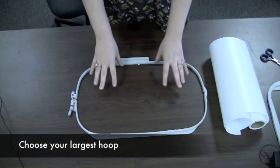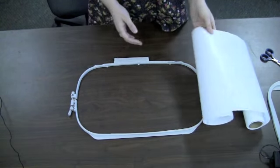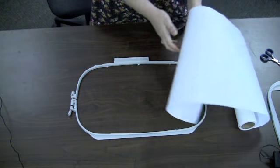To stitch out reed panels, use the largest hoop you have for your sewing machine so that you can possibly get more than one reed panel in your hoop.